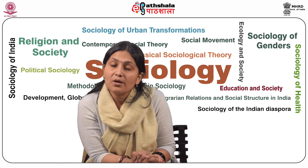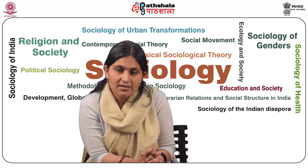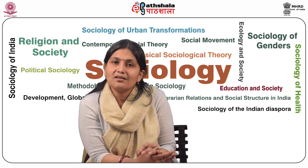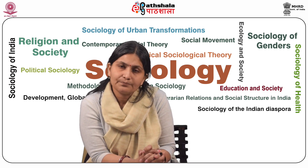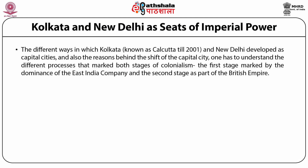In recent times, both Kolkata and Delhi have been trying to emulate other world cities in various ways that recreate pockets of global experience. To understand the different ways in which Kolkata, known as Calcutta till 2001, and New Delhi developed as capital cities, and also the reasons behind the shift of the capital city, one has to understand the different processes that marked both stages of colonialism — the first stage marked by the dominance of the East India Company and the second as part of the British Empire.